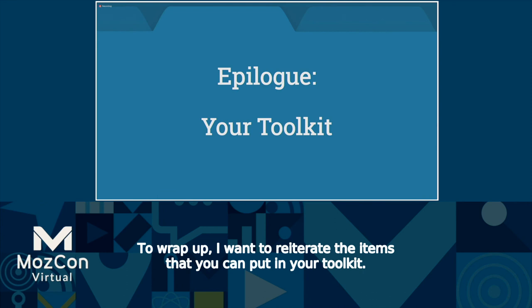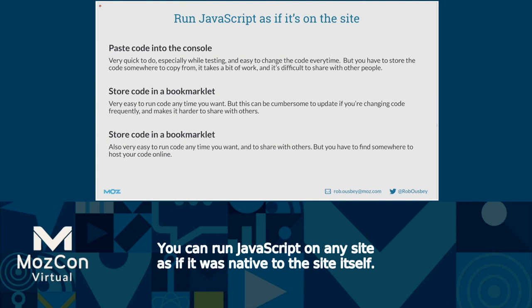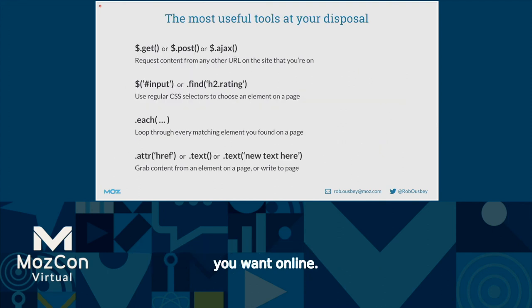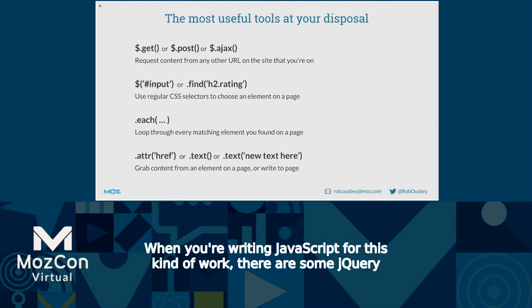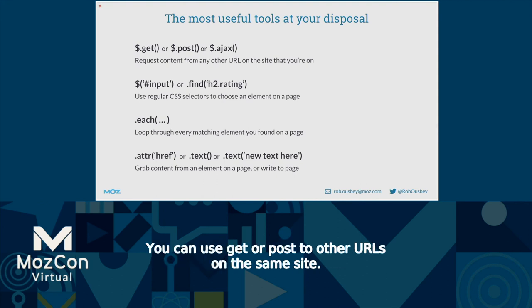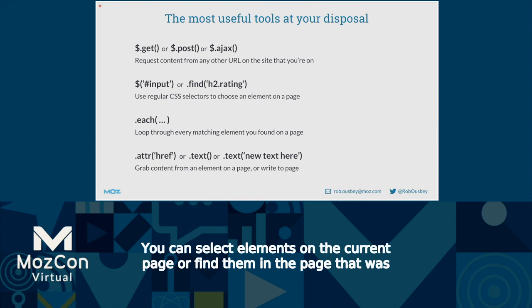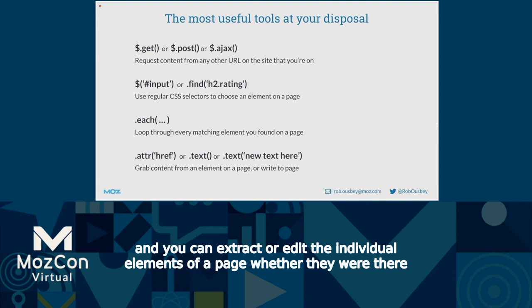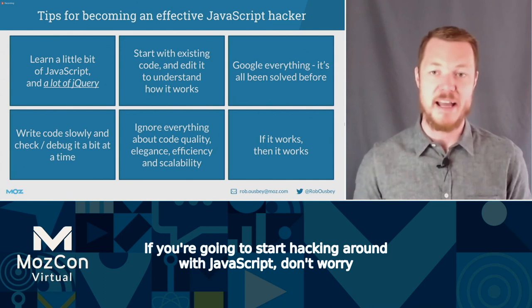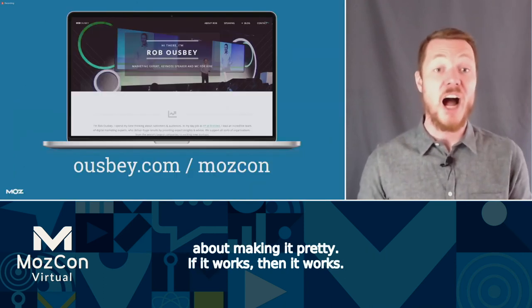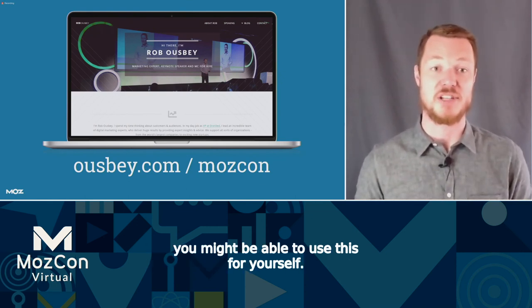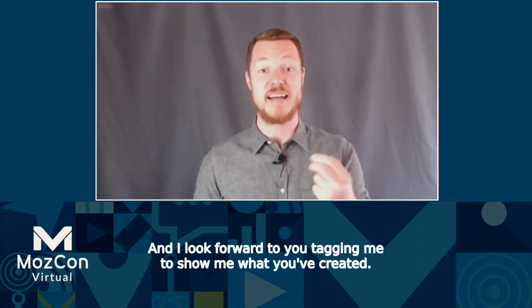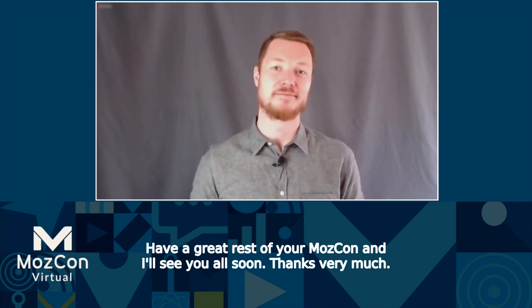To wrap up, here are the items you can put in your toolkit. You can run JavaScript on any site as if it were native — run it in the DevTools console, store it in a bookmarklet, or use a bookmarklet to import an external JavaScript file. jQuery functions you'll want often: GET or POST to other URLs on the same site, .find to select elements, .each to iterate, and .text or .html to extract or edit elements. If you're going to start hacking around with JavaScript, don't worry about making it pretty — if it works, it works. Follow me on Twitter at @RobOosby for more free tools. Have a great rest of your MozCon!